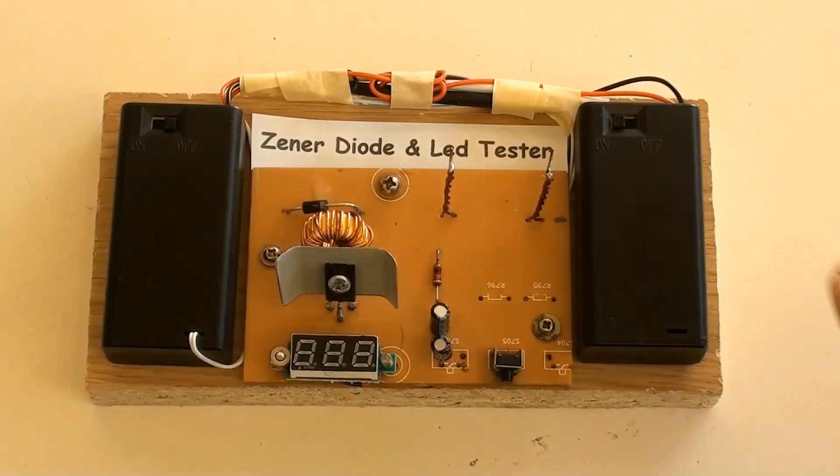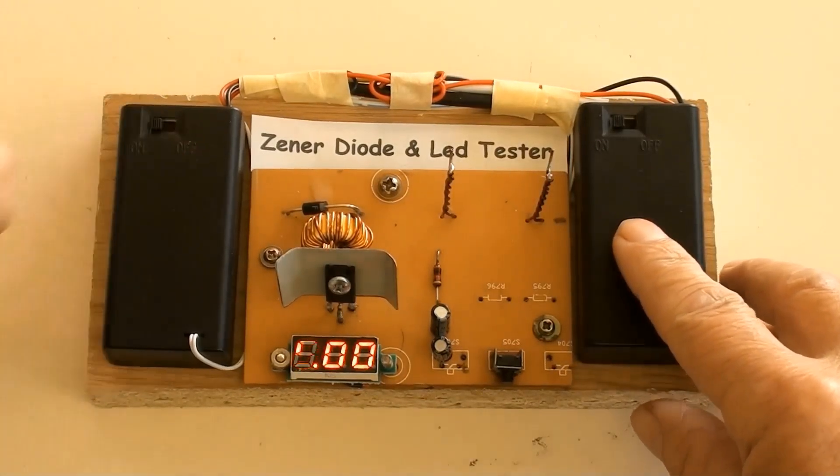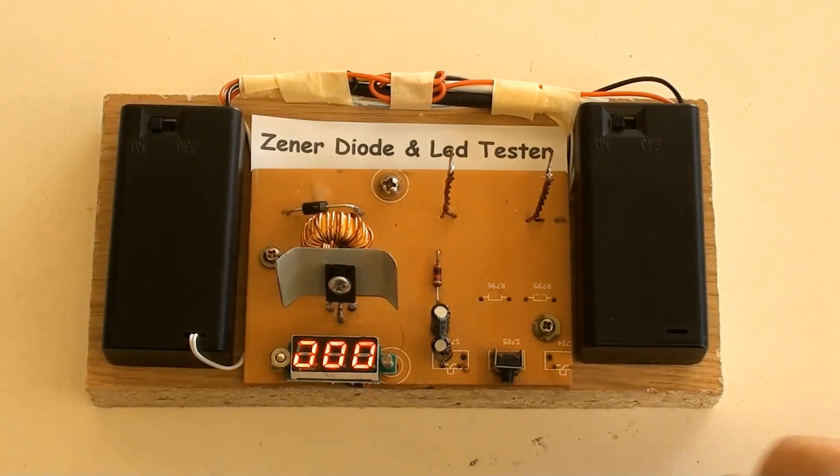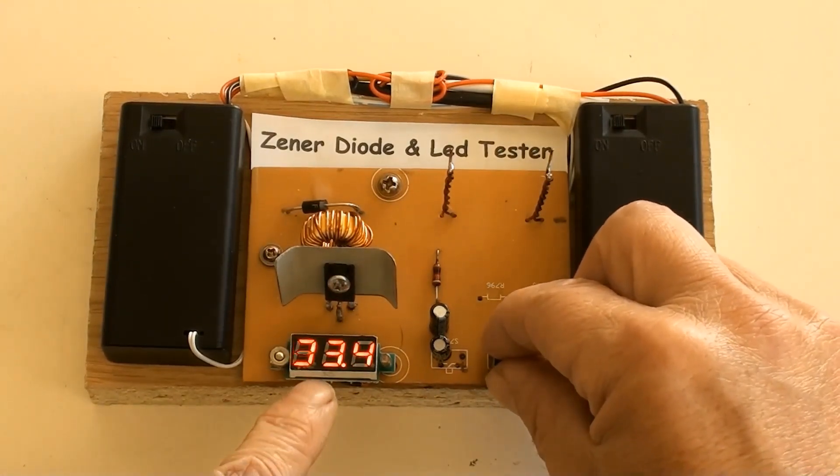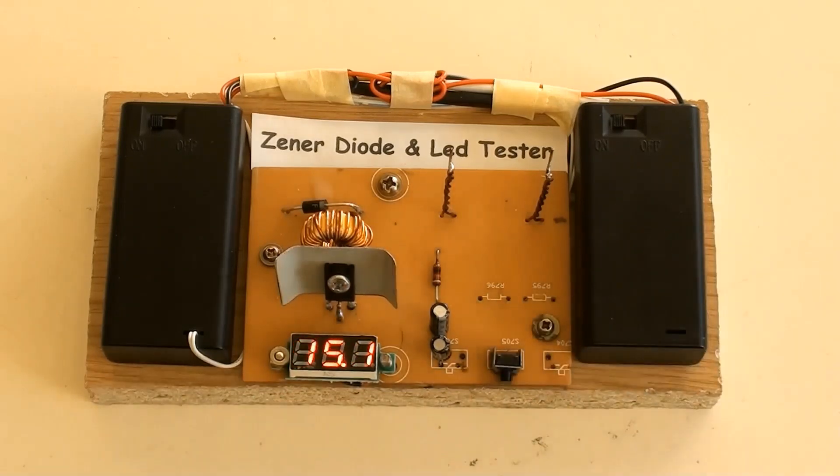Now the tester is ready to use. Switch the battery packs on. The mini digital voltage meter is on. Push the tactile on. The mini digital voltage meter indicated 83.6 volt.